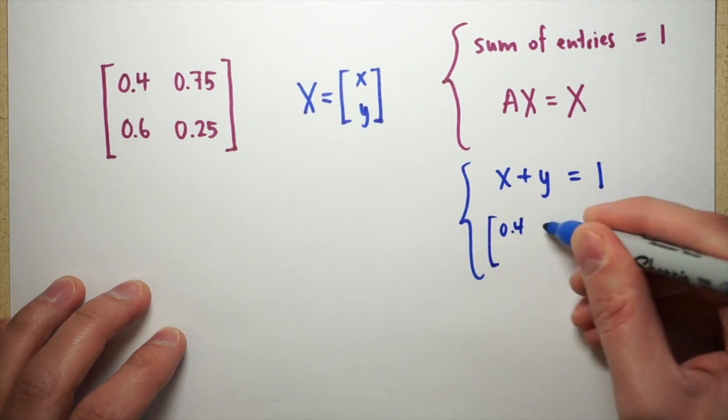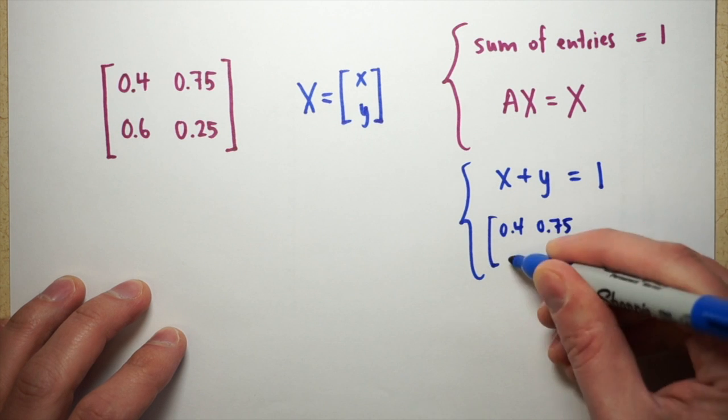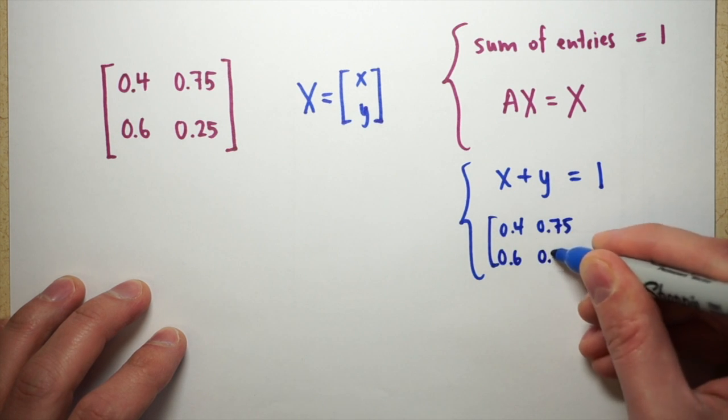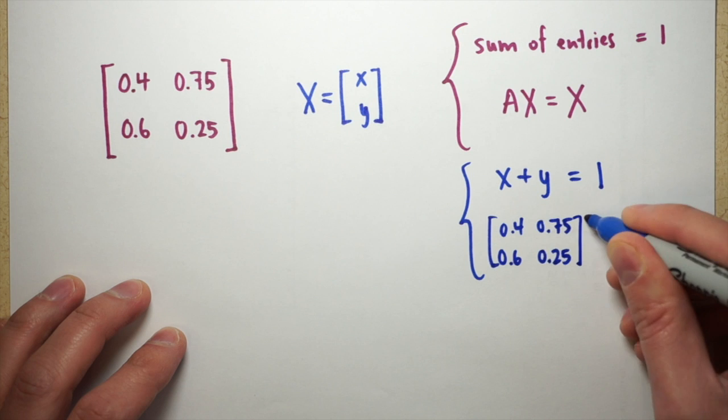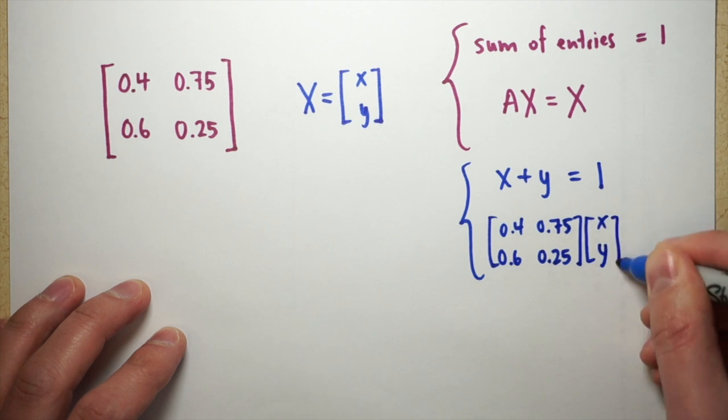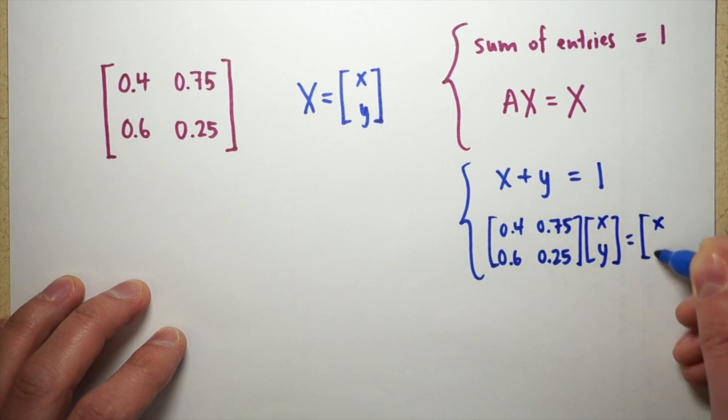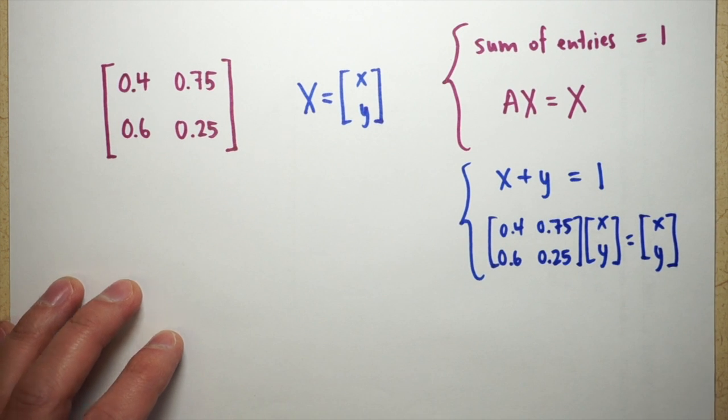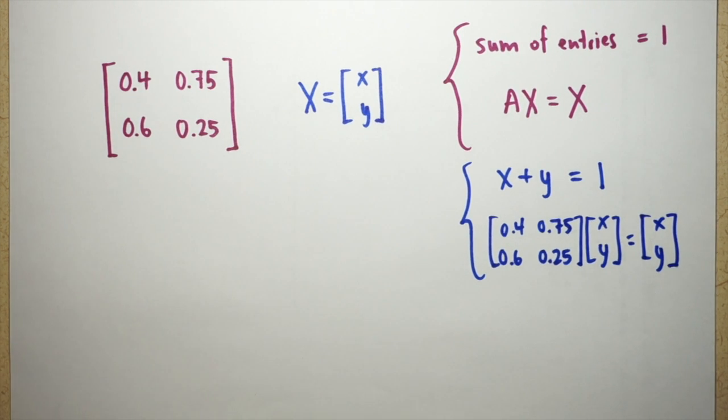Ax equals x is matrix multiplication. I take my original matrix 0.4, 0.75, 0.6, 0.25, and multiply it by the distribution I'm looking for, xy, and I want that to equal xy. This condition allows the matrix to be stable with this particular distribution.